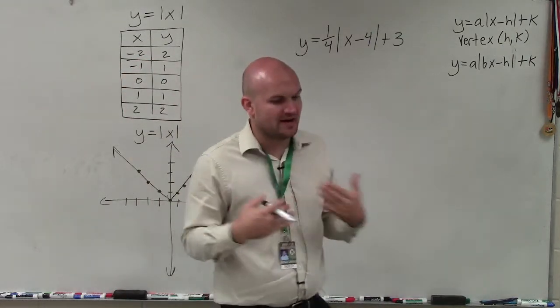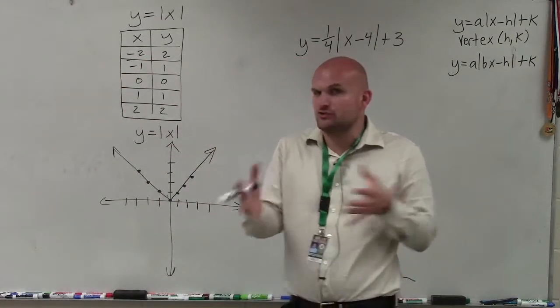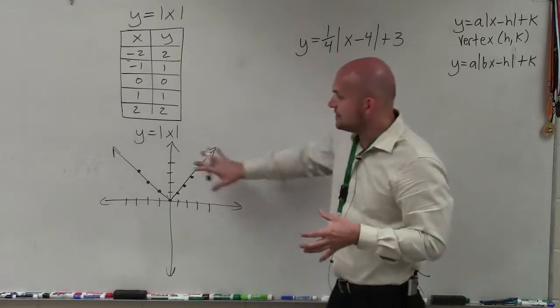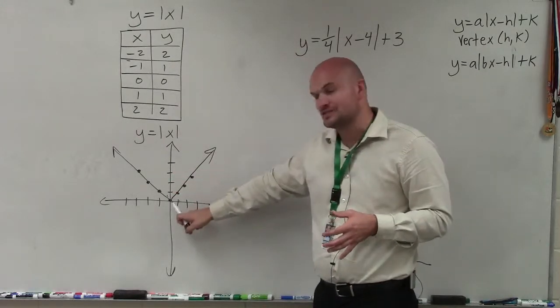So the first thing we want to do is identify what is going to be our new vertex. What are the transformations that affect our graph? So we have the parent graph here, the table, and you can see the vertex here is at 0, 0.